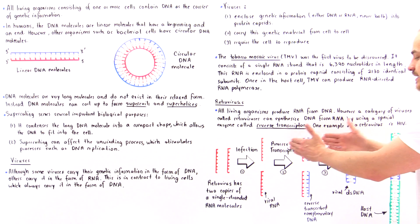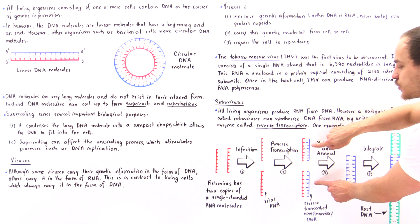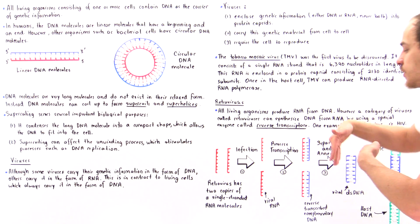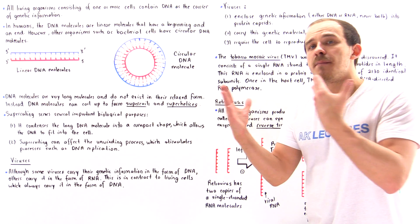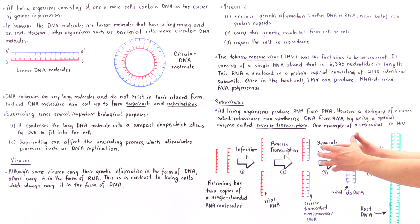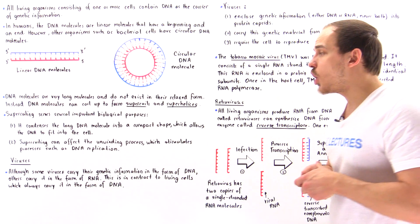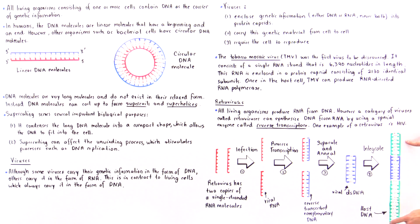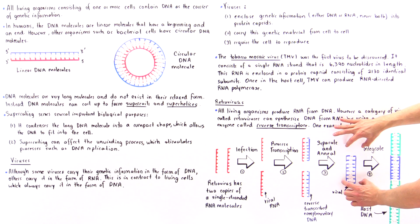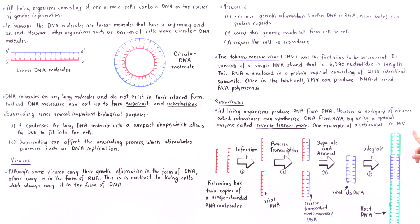Once the two complementary viral DNA strands anneal — meaning they combine to form that double helix structure — we have a viral double-stranded DNA molecule. That DNA molecule is then brought into the nucleus of the cell. Inside the nucleus, a second special enzyme known as integrase cuts the host DNA molecule, opens it up, and the double-stranded viral DNA integrates itself into the host DNA. This is how the majority of retroviruses actually work.